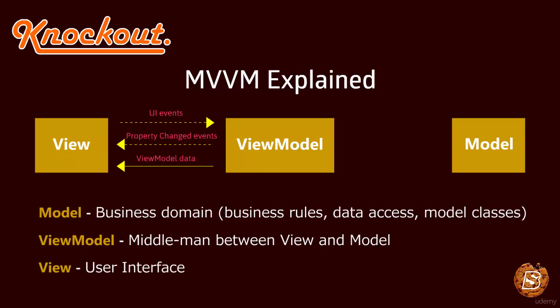Let's understand MVVM in detail, starting with the Model. The Model is what I like to refer to as the domain object. It represents the actual data and information we are dealing with. An example of a model might be a contact containing name, phone number, address, etc. The key to remember is that the model holds the information but not behaviors or services that manipulate the information.